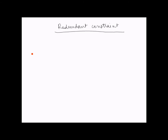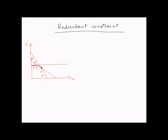For example, let's say this is a graph. One constraint goes like this, the other one goes like this, and the third goes like this. All of them are less-than-or-equal-to constraints pointing to this region. In this example, our feasible solution region becomes this, this, and this.